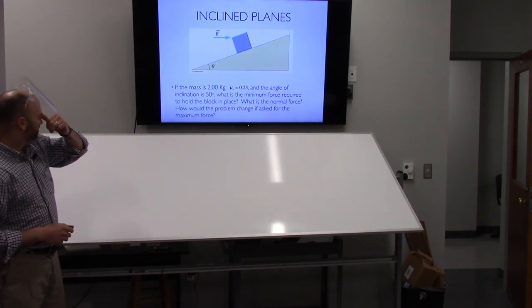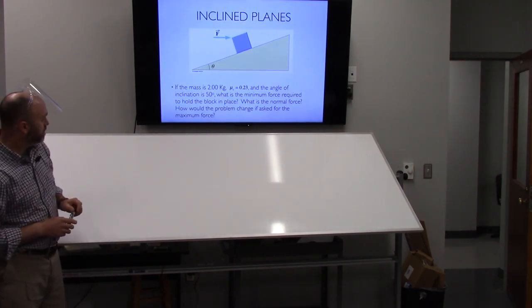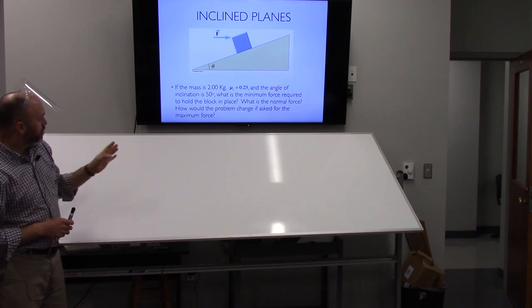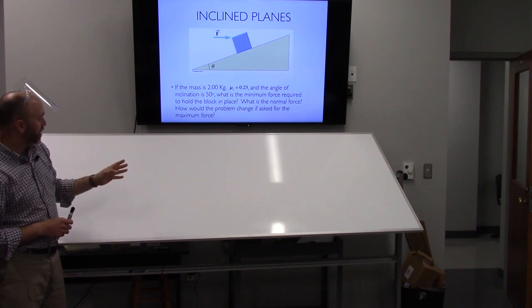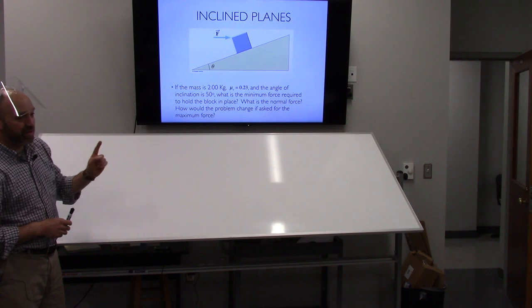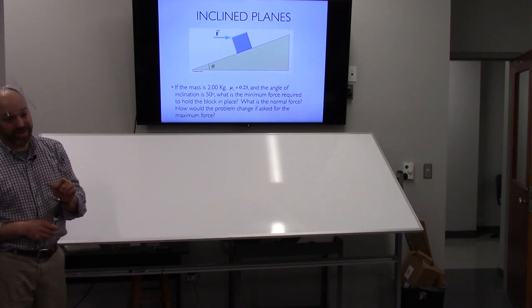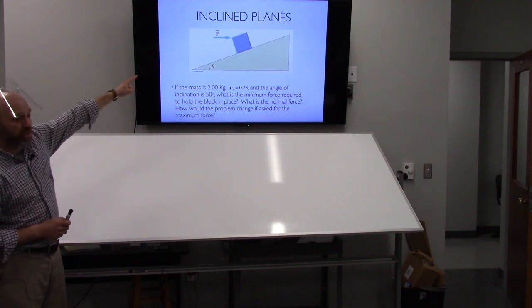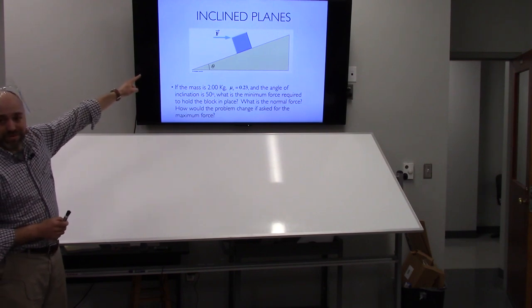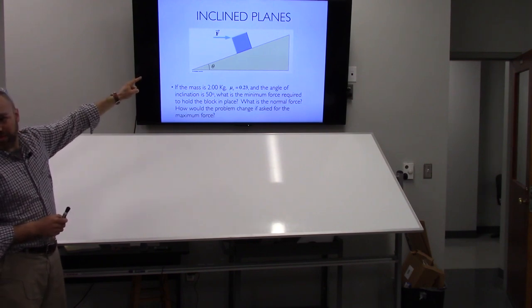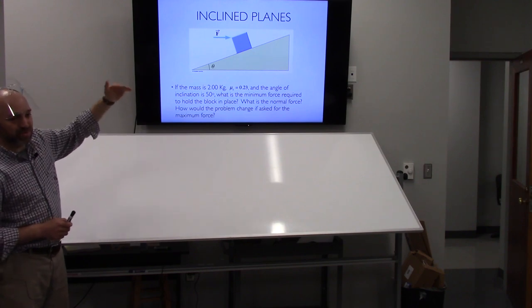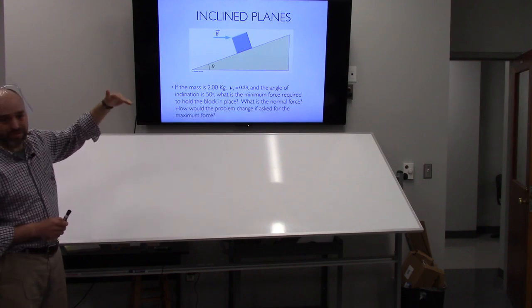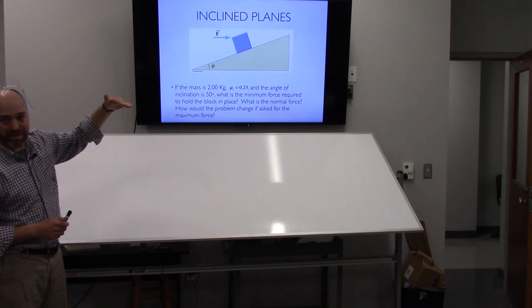You've got a block on the incline plane. The question is, what's the minimum force required to hold the block in place? Notice what makes this different than what you did in lab is the direction of the force. In lab we pulled along the incline, this one's along the ground not along the incline.